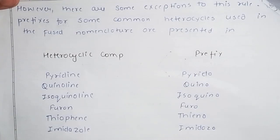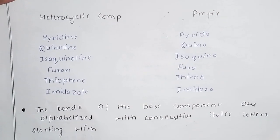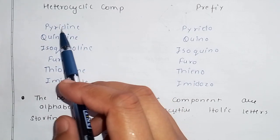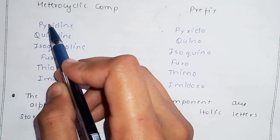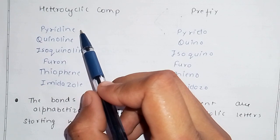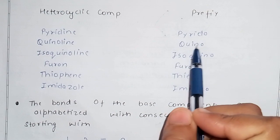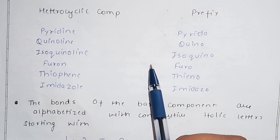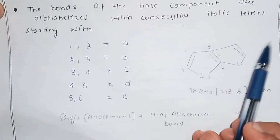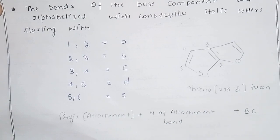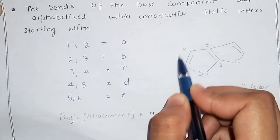Here are some exceptions to these rules — for example, purines and some other special named compounds. For the attachment compound, we need to represent the number of attachment bonds. The attachment compound — for example furan — is called a suffix of the base compound. We give the ring atoms numbers: 1, 2, 3, 4, 5.